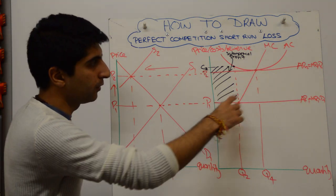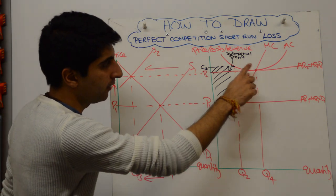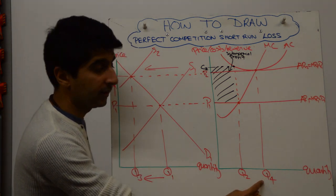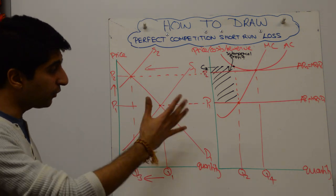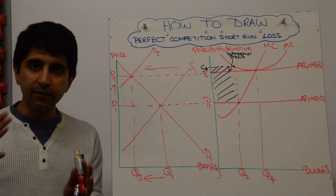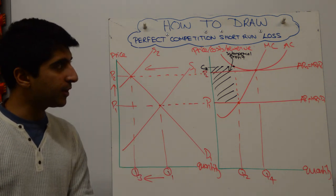And that point there, you'll see normal profit, because AR is equal to AC at that profit maximizing level of quantity. And we've basically drawn the diagram perfectly. And it looks good, doesn't it? It looks really good. And it's doing everything it should be doing. So that's how you construct this diagram.